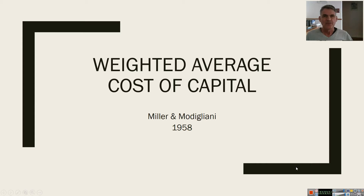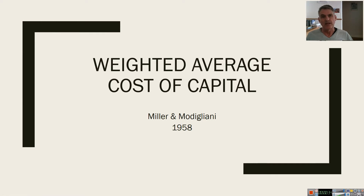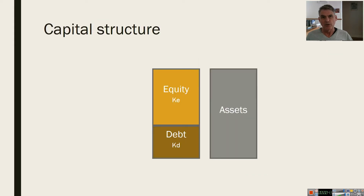Hi, I'm Mike Ward. I want to talk to you about the weighted average cost of capital. You will know that this is the discount rate at which we discount the free cash flows that a company will produce when we're trying to value the company. The lower the weighted average cost of capital, or WACC as we typically call it, the higher the value of the company will be. I want to focus in particular on what Miller-Modigliani, two famous researchers, came up with in 1958, when they focused on what we refer to as the optimal capital structure for a company.